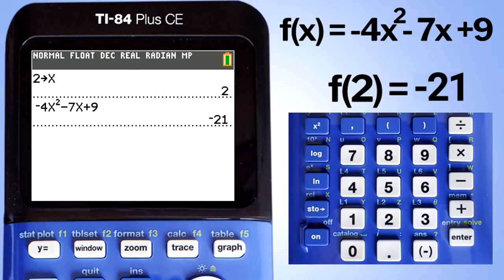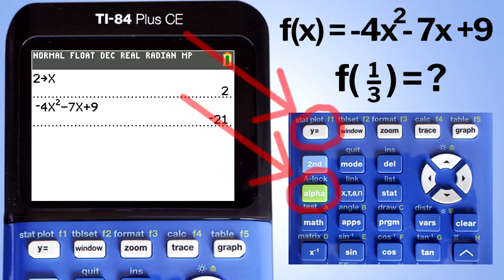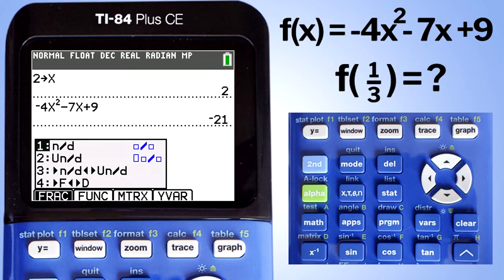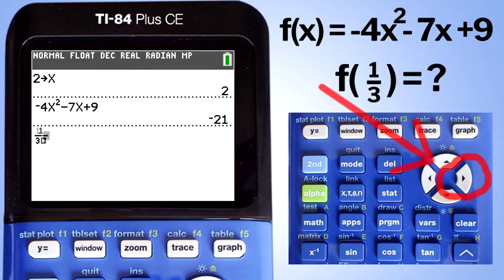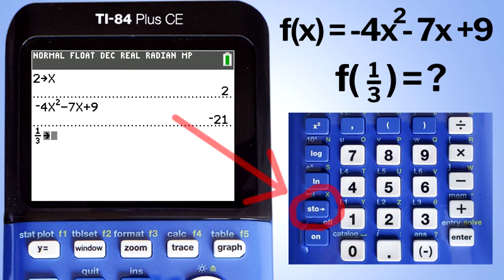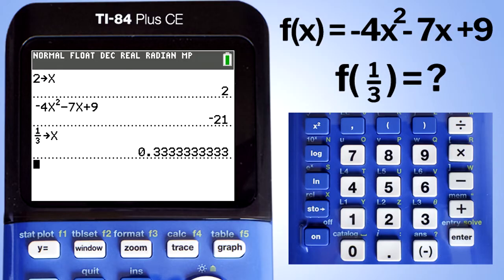We are going to keep the same function, f of x equals negative 4x squared minus 7x plus 9, but now we will work with fractions. We want to evaluate at f of one third. The first step is to assign one third to the variable x using fraction format. Press the alpha button, then the y equals button. This screen appears — choose number 1 and press enter. The fraction template appears. Enter 1 on top, press the down arrow, enter 3, press the right arrow, then press the store button, then the x button, then enter. We have now assigned the value of one third to x.